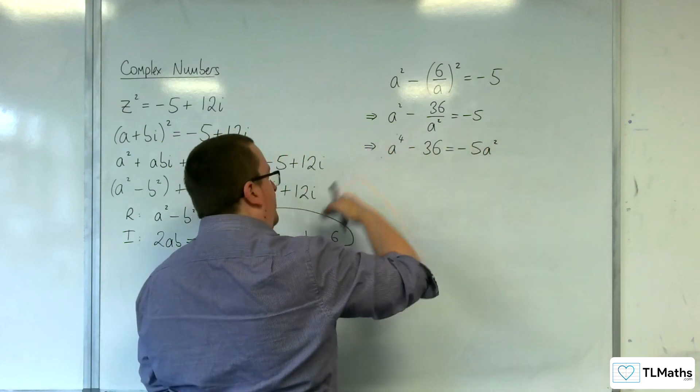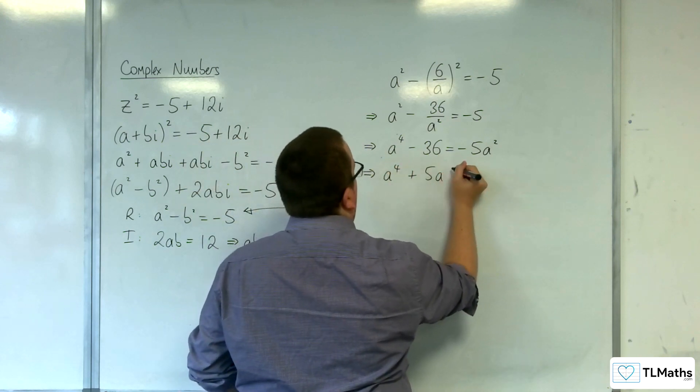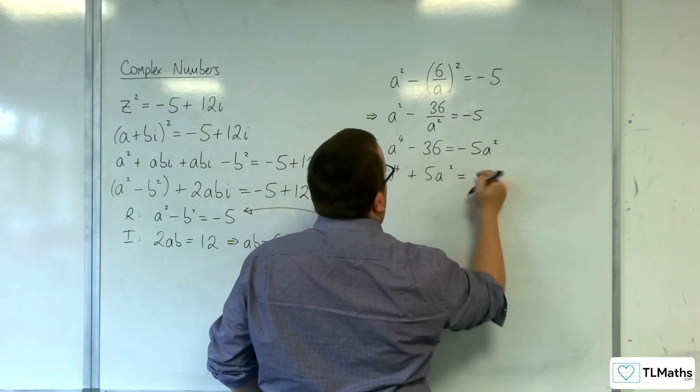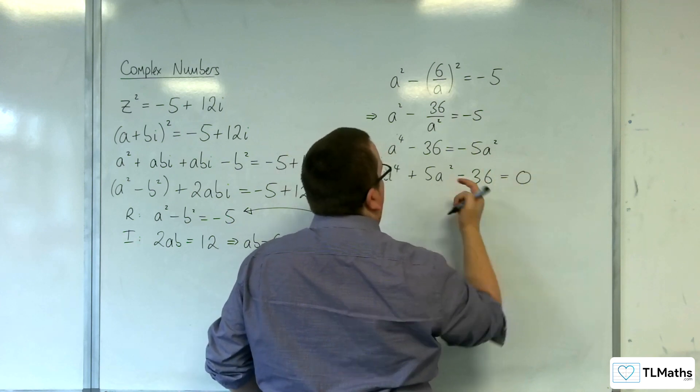Let's multiply both sides by the a². So a⁴ take away 36 is equal to -5a². Let's add the 5a² to both sides. And then we've got the take away 36 is equal to 0.